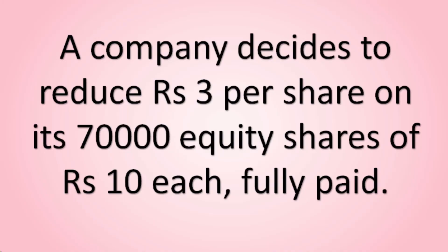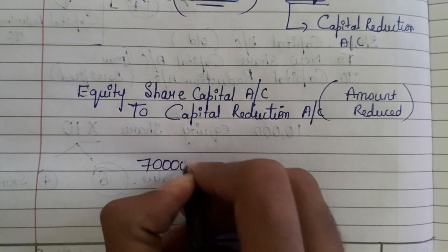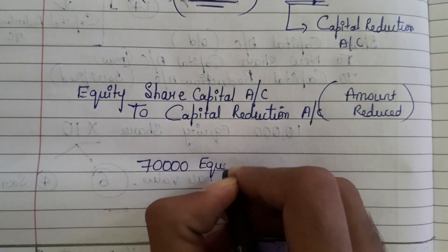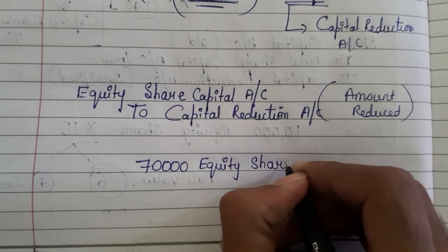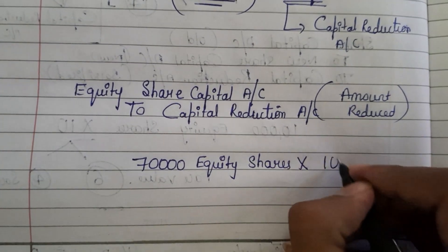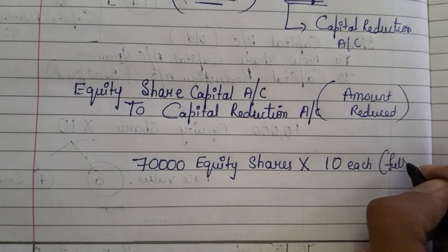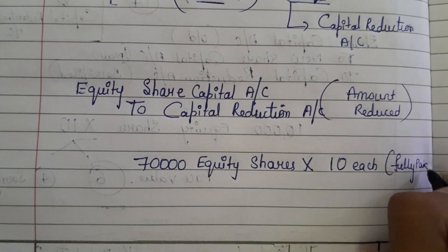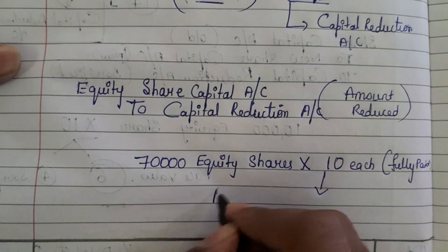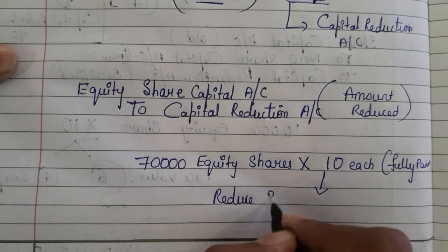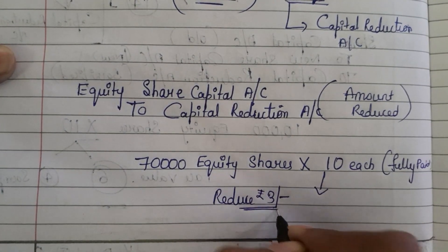So let us see the question. A company decides to reduce rupees three per share on its 70,000 equity shares of rupees 10 each, fully paid. So the company is having 70,000 equity shares, each with a face value of rupees 10, fully paid. They are reducing rupees 3 per share.